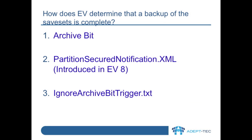How does Enterprise Vault determine that a backup of the save set has completed? It can use the archive bit on the file on the file system. It can use the partition-secured-notification.xml file, which was introduced in Enterprise Vault 8 and onwards. And it can also use a file called the ignore-archive-bit-trigger.txt file.